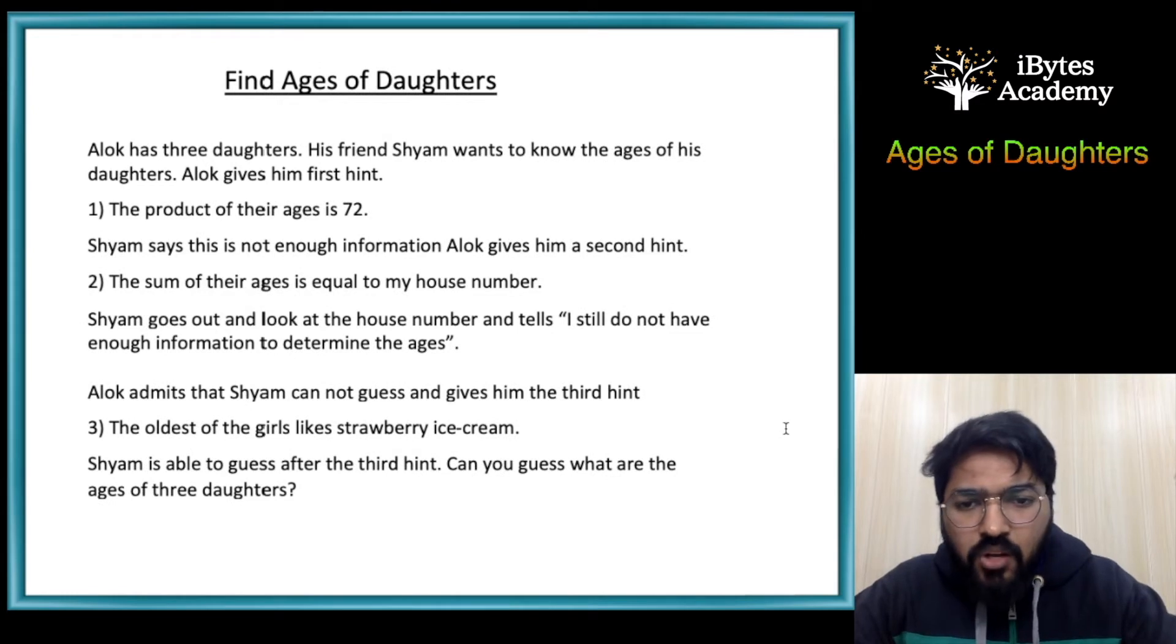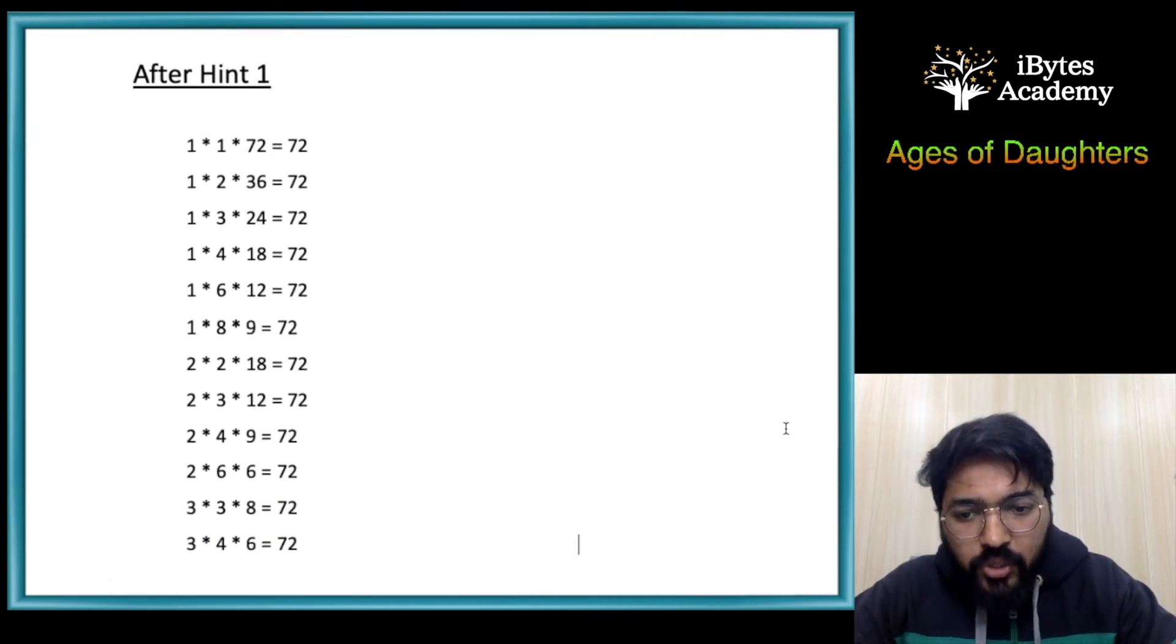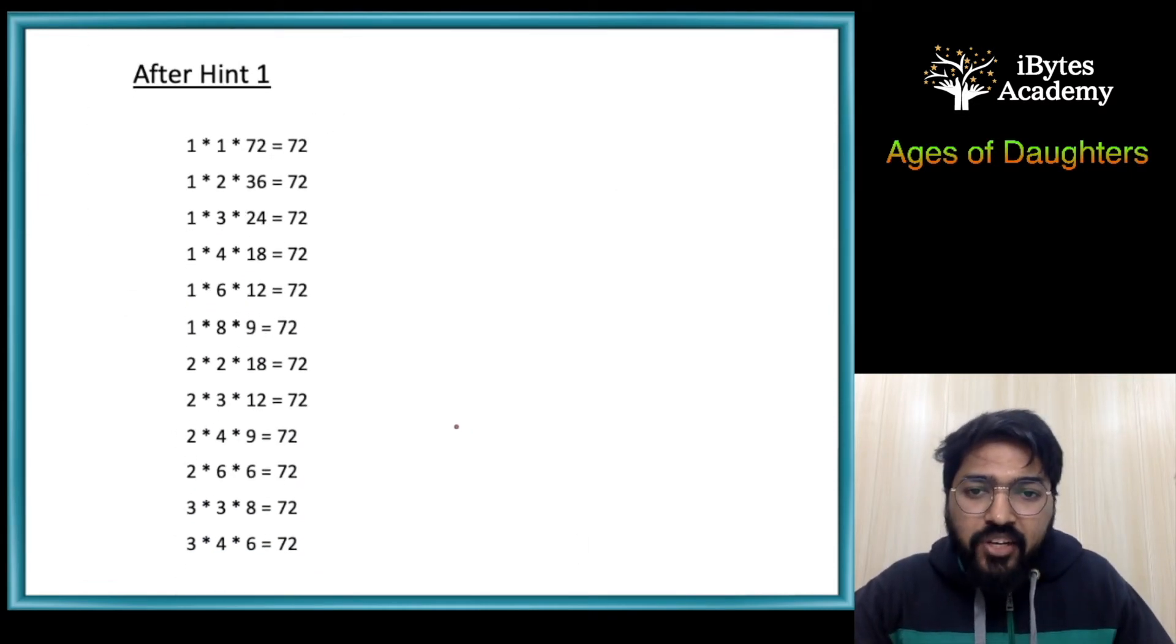Now let's discuss. After the first hint that the product of their ages is 72, Shyam looked at all the possibilities. These were all the possibilities where the product of three numbers can be 72.